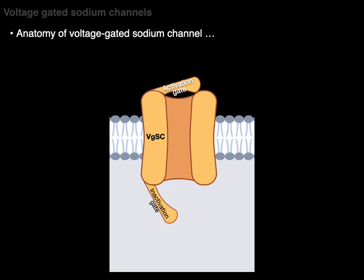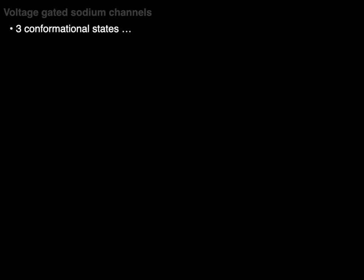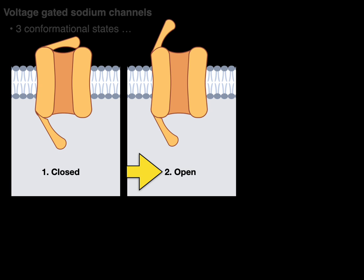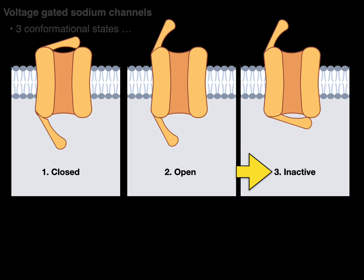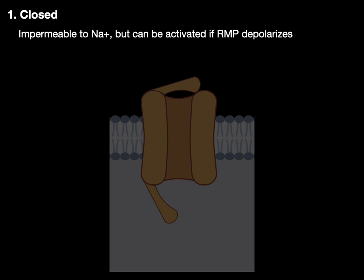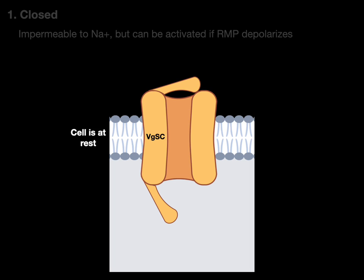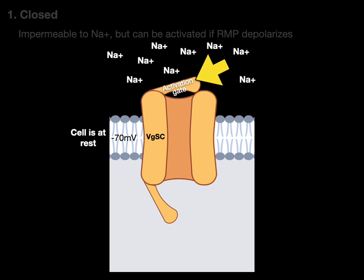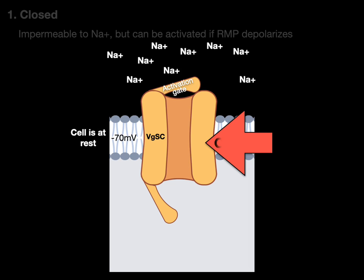A voltage-gated sodium channel has three conformational states: closed, open, or inactive (refractory period). In the first state, closed, the VGSC is impermeable to sodium ions but can be activated if the resting membrane potential depolarizes. The cell is at rest — for a neuron that's -70 millivolts — and the activation gate is closed, so the high concentration of sodium in the interstitial space cannot diffuse down its gradient. Sodium is a charged ion and cannot cross the membrane without a transporter.